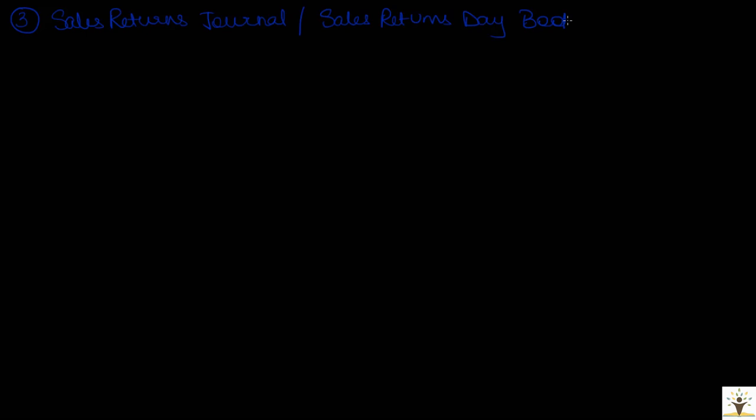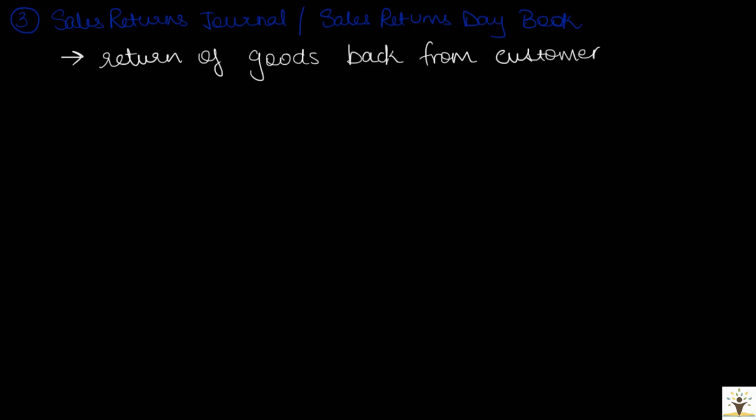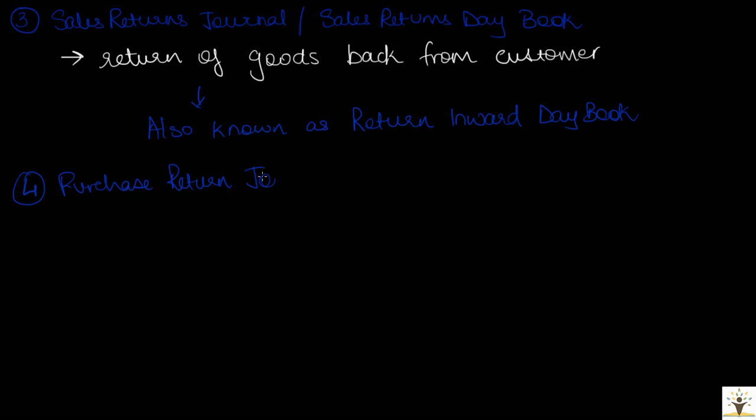The third book is the sales returns journal, also known as the sales returns day book. This book is used to record transactions involving return of goods from the customer. Sales returns is also known as return inwards in accounting because goods flow back into the business. Hence, the sales returns day book is also known as the return inwards day book.